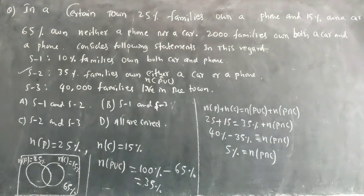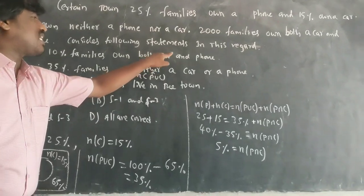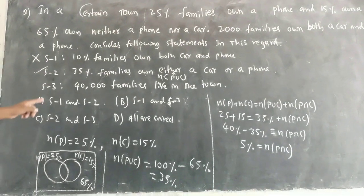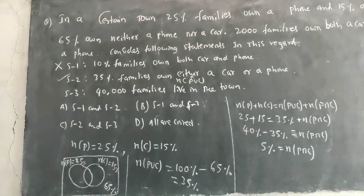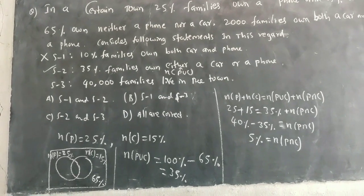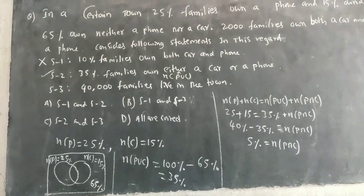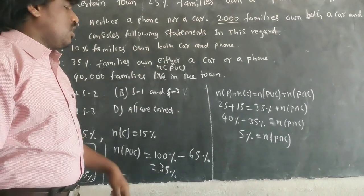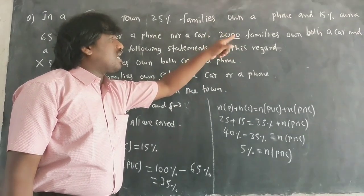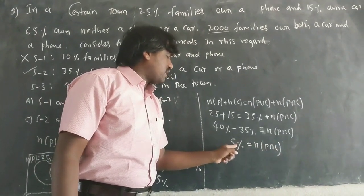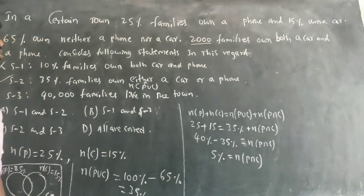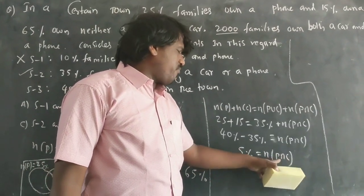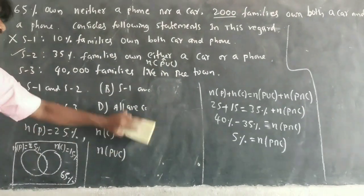5% of the total families own both phone and car. The problem states 20,000 families own both. So 5% of the total equals 20,000 members. Let Y be the total number of families in the town. Then 5% of Y = 20,000, meaning 5 divided by 100 times Y = 20,000.